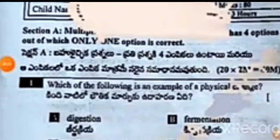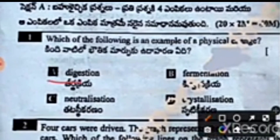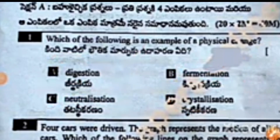Your first question is: which of the following is an example of physical change? The options are digestion, fermentation, neutralization, and crystallization. Digestion means digesting the food, fermentation is another process, neutralization means controlling acids. The right answer to the first question is crystallization, which is a physical change.